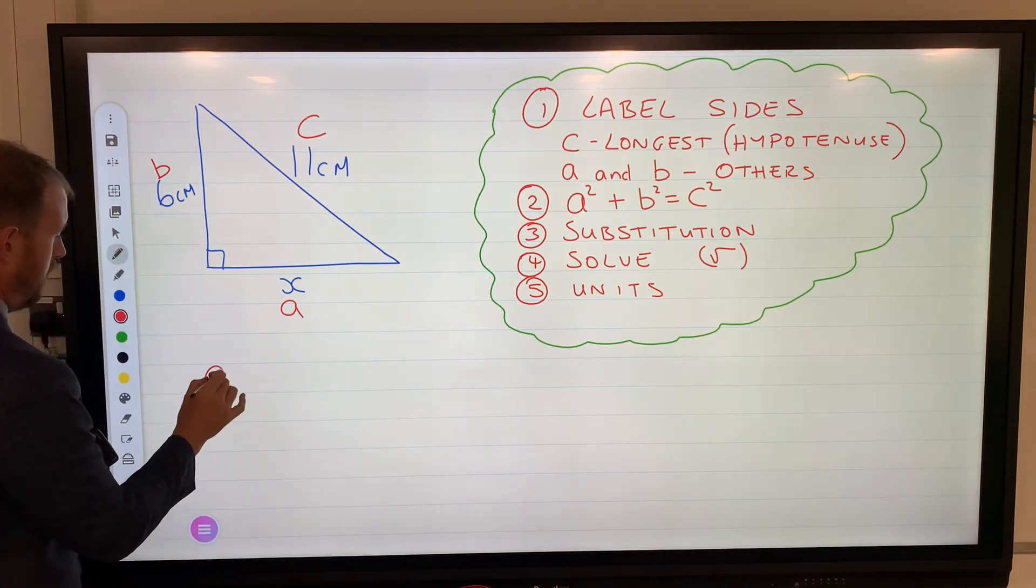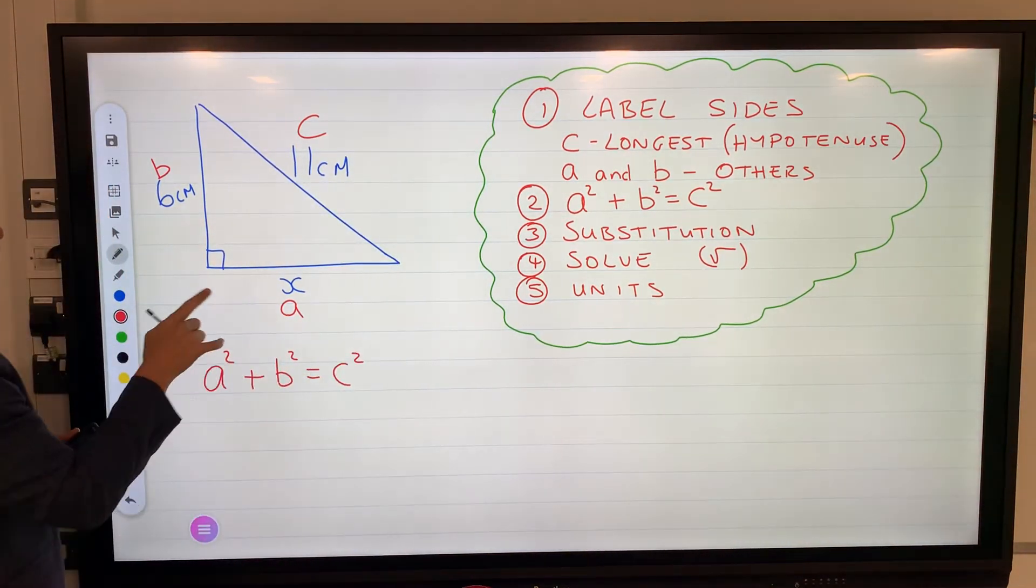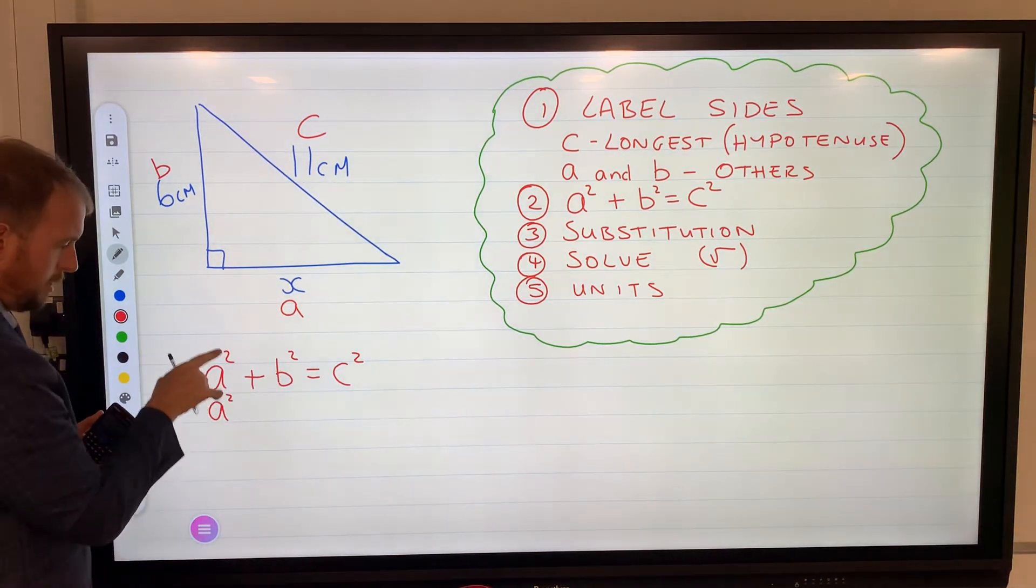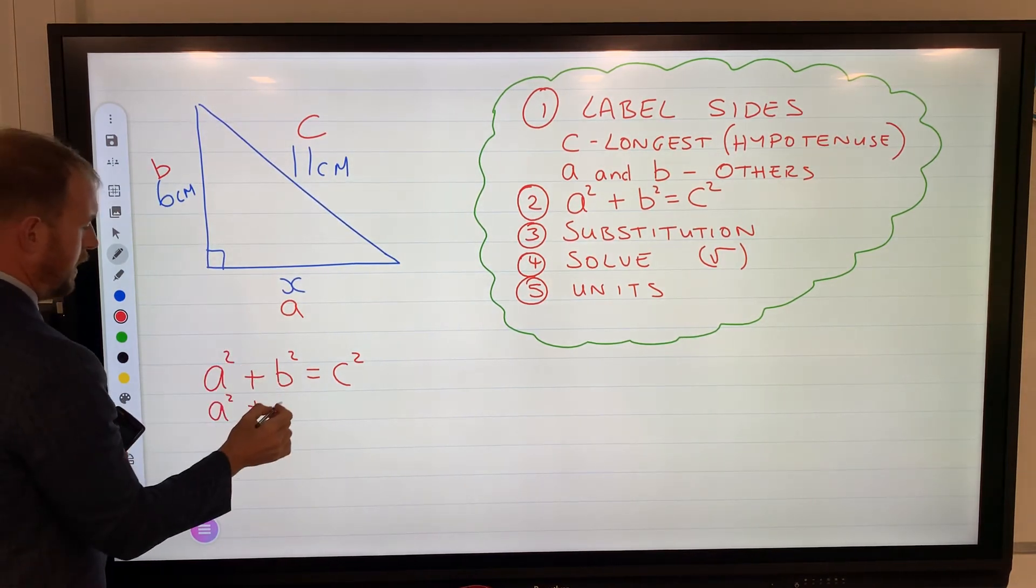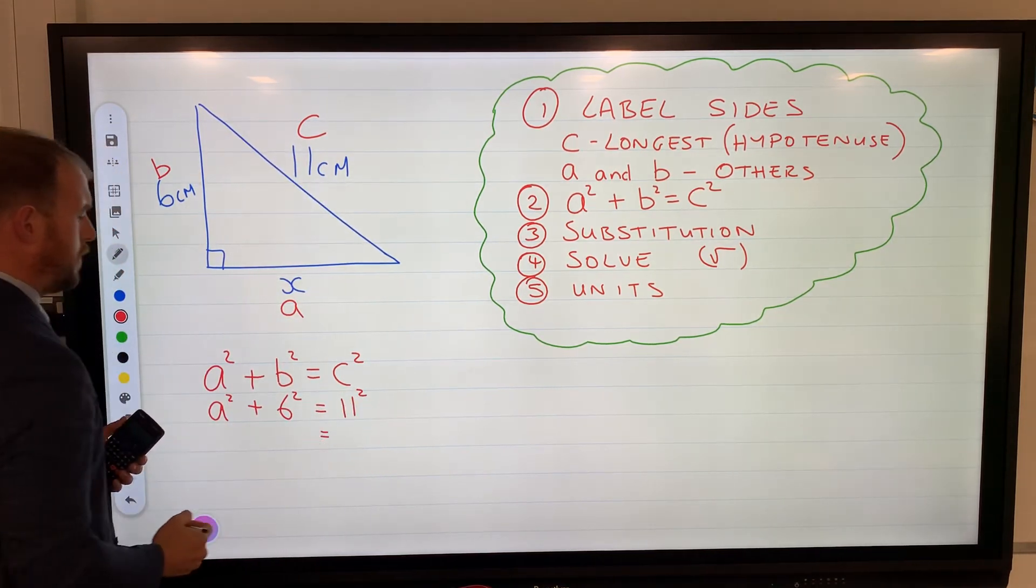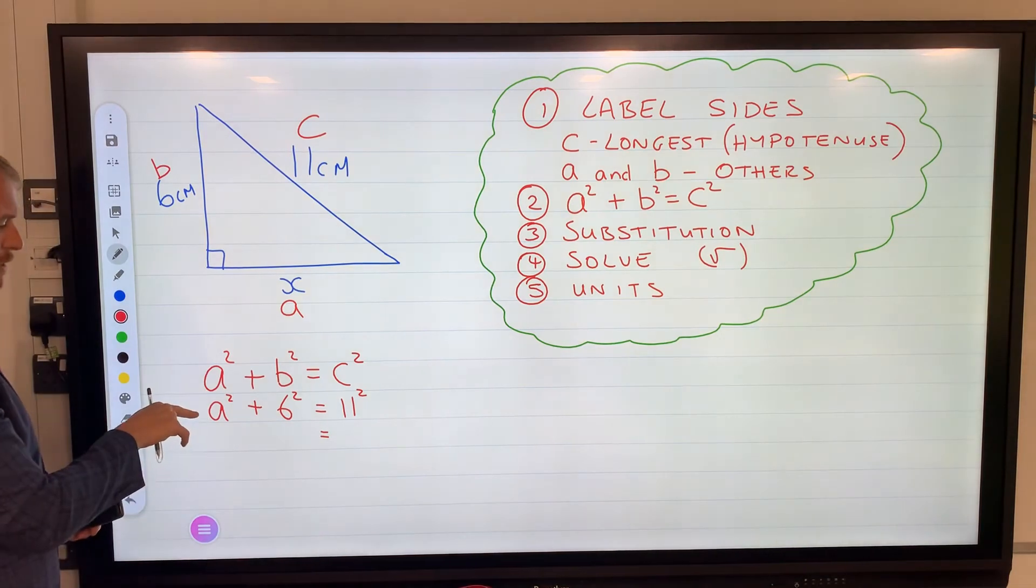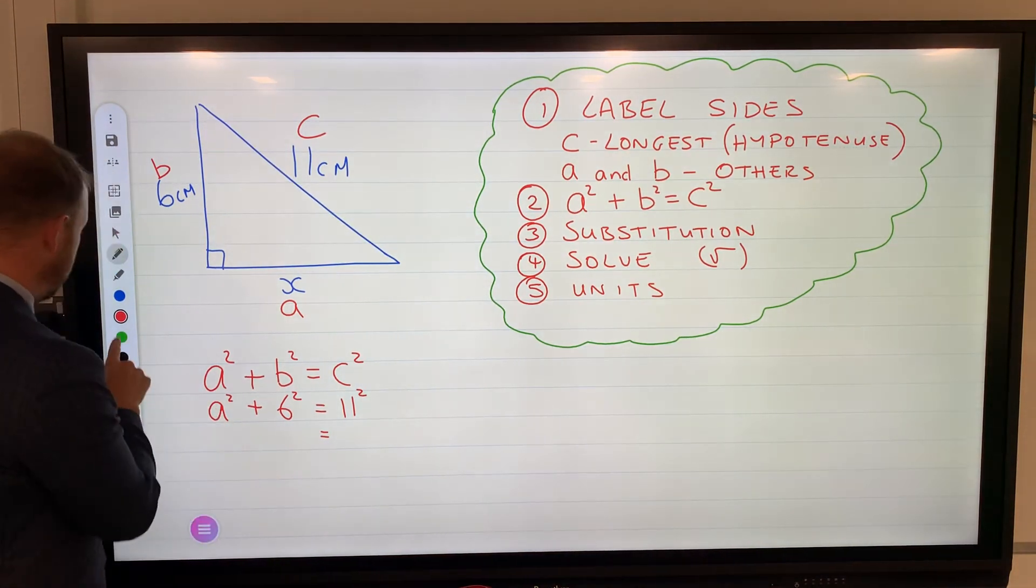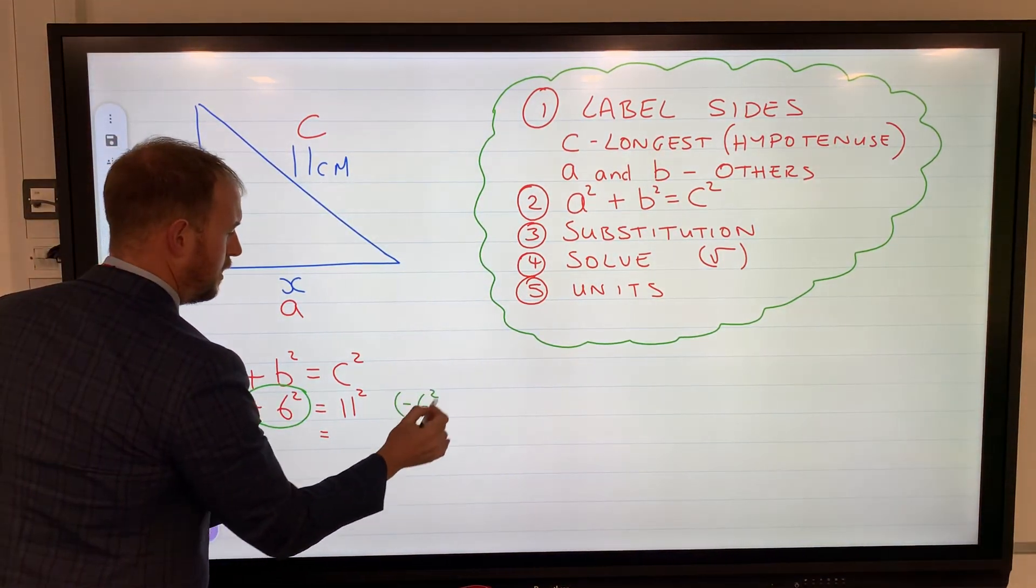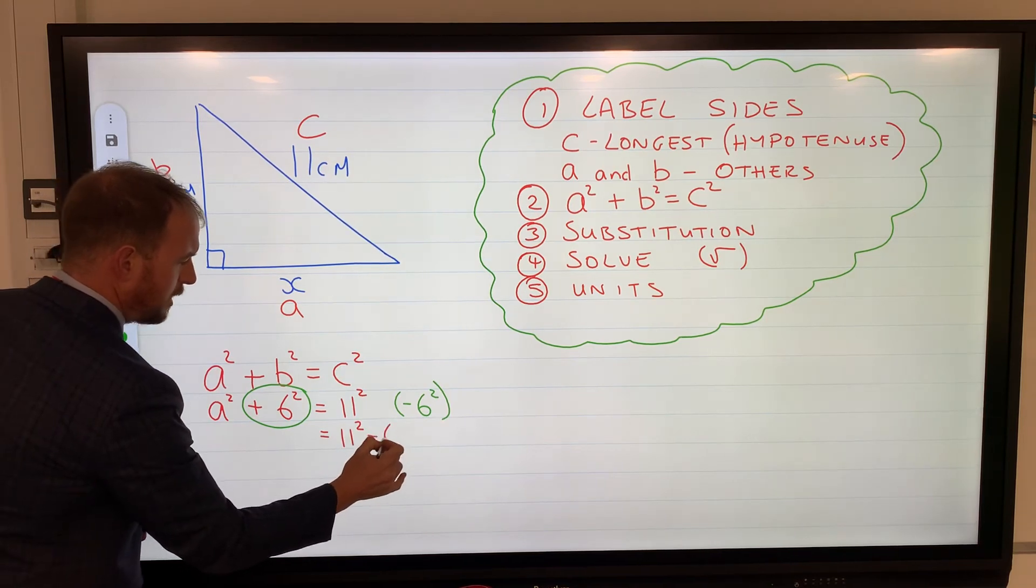Second step: formula. A squared plus b squared equals c squared. Substitution. Now we don't have a value for a, so a has to stay as it is, could use an x if you wanted to, still squared though. B is 6 squared, and then c is 11, so it's 11 squared. Now we want the value of a, which means we have to solve this and make a the subject. If I was to make a the subject, I need to eliminate this plus 6 squared, so I need to subtract 6 squared from both sides. So I've now got 11 squared subtract 6 squared.